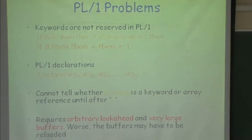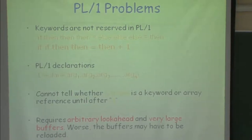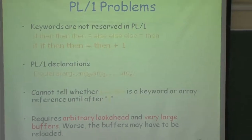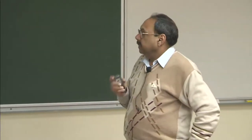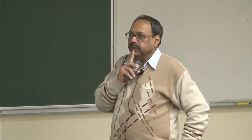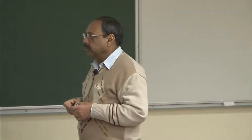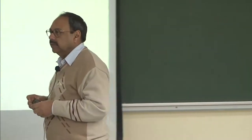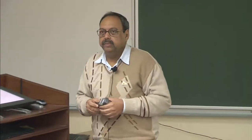I gave some examples from Fortran and PL/1. People may argue these are vintage languages, nobody uses them, and therefore this problem does not exist today. So the question is: have we resolved this issue? Do you know of examples of languages that are very prevalent today where I cannot find out without context what kind of token I am dealing with?